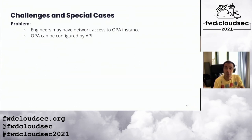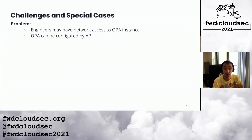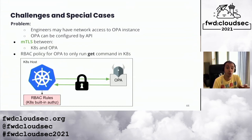The next problem was that unprivileged engineers with network access could curl the OPA API and modify authorization policies, entirely bypassing the authorization system — really bad for our security posture. As a solution, we set up mTLS between Kubernetes and OPA. Additionally, we created an RBAC policy for OPA to only run get commands in Kubernetes clusters, aiming to mitigate privilege escalation attacks through OPA.